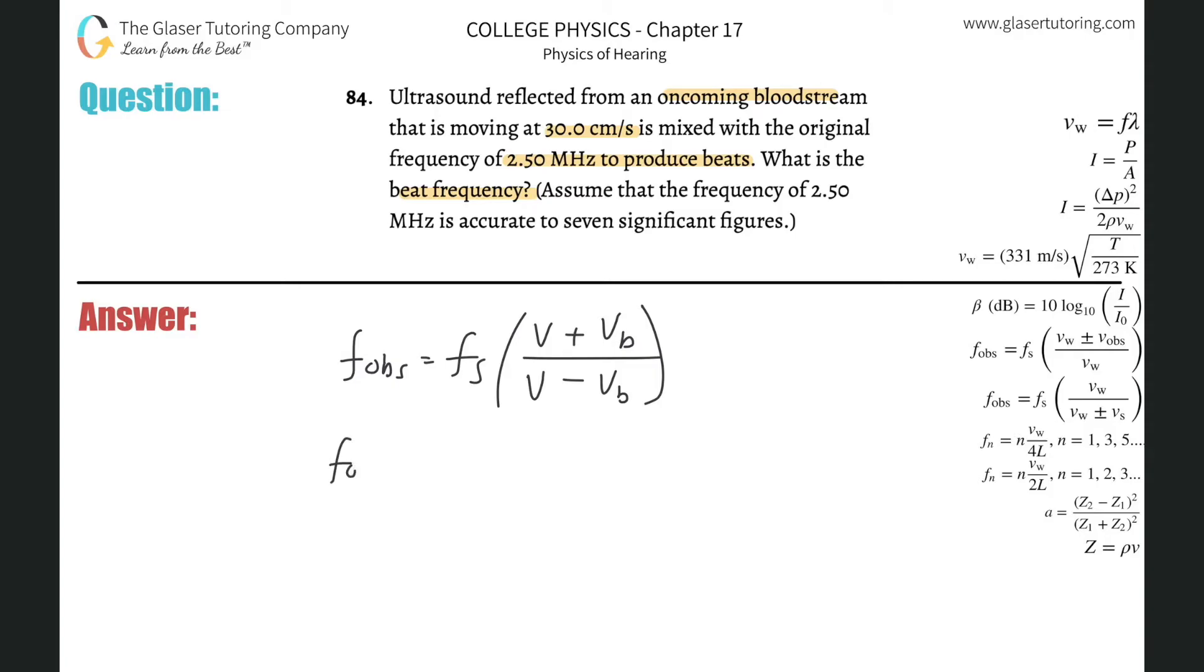So the observed frequency here will simply be equal to the source frequency of 2.5 megahertz—that's times 10 to the 6, let's just convert that into hertz for now. And then the velocity, this is through blood, right? So basically we'll use the average. It's traveling through all types of tissue, so we'll just use the average of about 1540 meters per second through the body tissues.